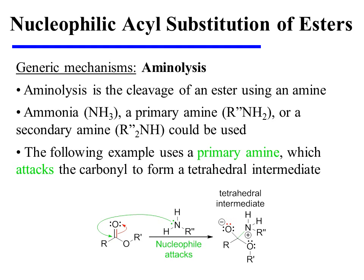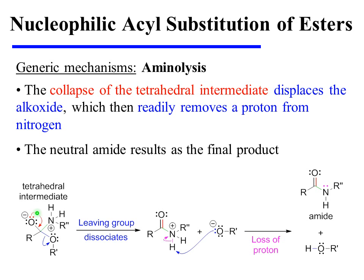The final nucleophilic acyl substitution reaction of esters is called aminolysis — the cleavage of an ester using an amine. Ammonia, a primary amine, or a secondary amine could be used. In the example shown here, a primary amine is utilized, and it attacks the carbonyl carbon to form a tetrahedral intermediate as the pi bonding electrons are pushed onto oxygen. The collapse of the tetrahedral intermediate may then displace an alkoxide, and when that occurs, the alkoxide readily removes a proton from the nitrogen to neutralize its charge, and the neutral amide is formed as the final reaction product.